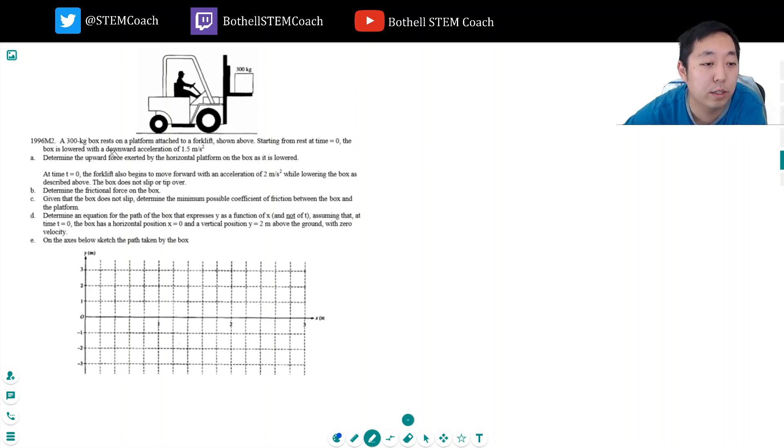A 300 kilogram box rests on a platform attached to a forklift shown above. Starting from rest at time t equals 0, the box is lowered with a downward acceleration of 1.5 meters per second squared. I want to write that down: 300 kilograms. Determine the upward force exerted by the horizontal platform on the box as it is lowered.